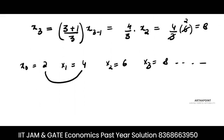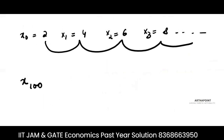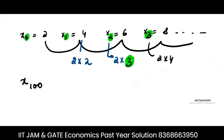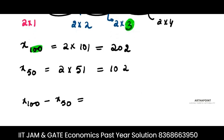The pattern shows xₙ = 2(n+1). So x₁₀₀ = 2 × 101 = 202, and x₅₀ = 2 × 51 = 102. Therefore x₁₀₀ − x₅₀ = 202 − 102 = 100.